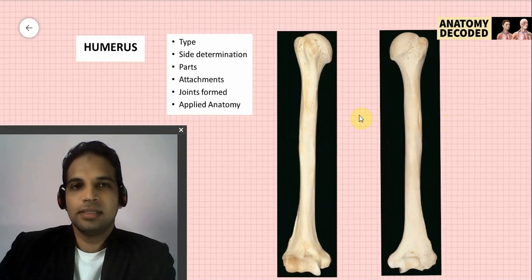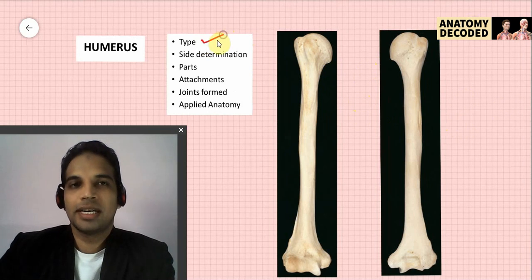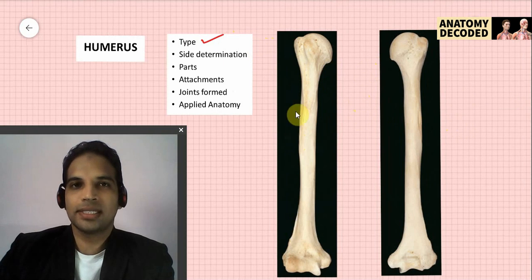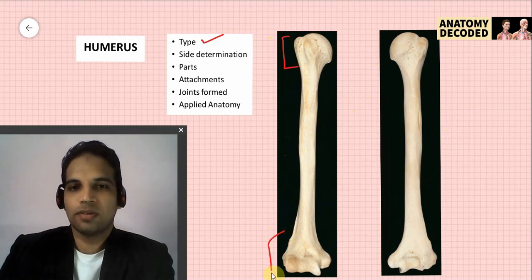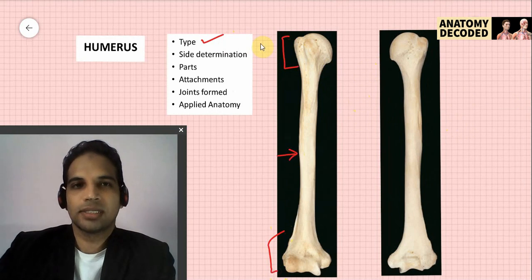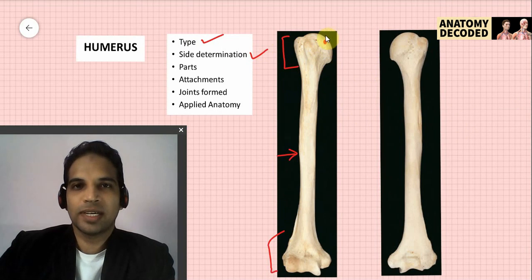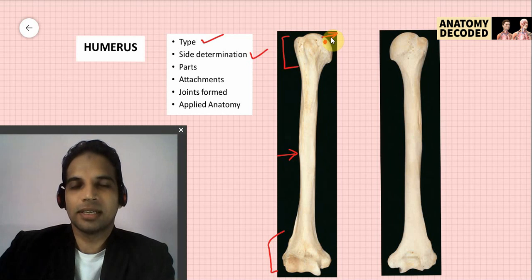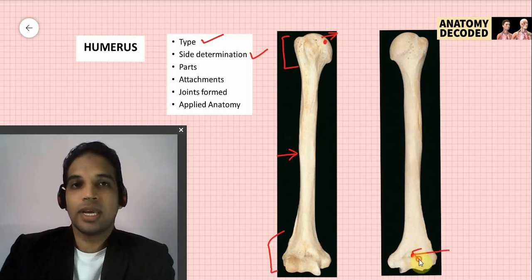The humerus is an example of a typical long bone with two ends and a shaft. For side determination: the head of the humerus is on the superior aspect and faces medially; the olecranon fossa of the humerus is on the posterior aspect. The humerus can be viewed from the anterior and posterior aspects.